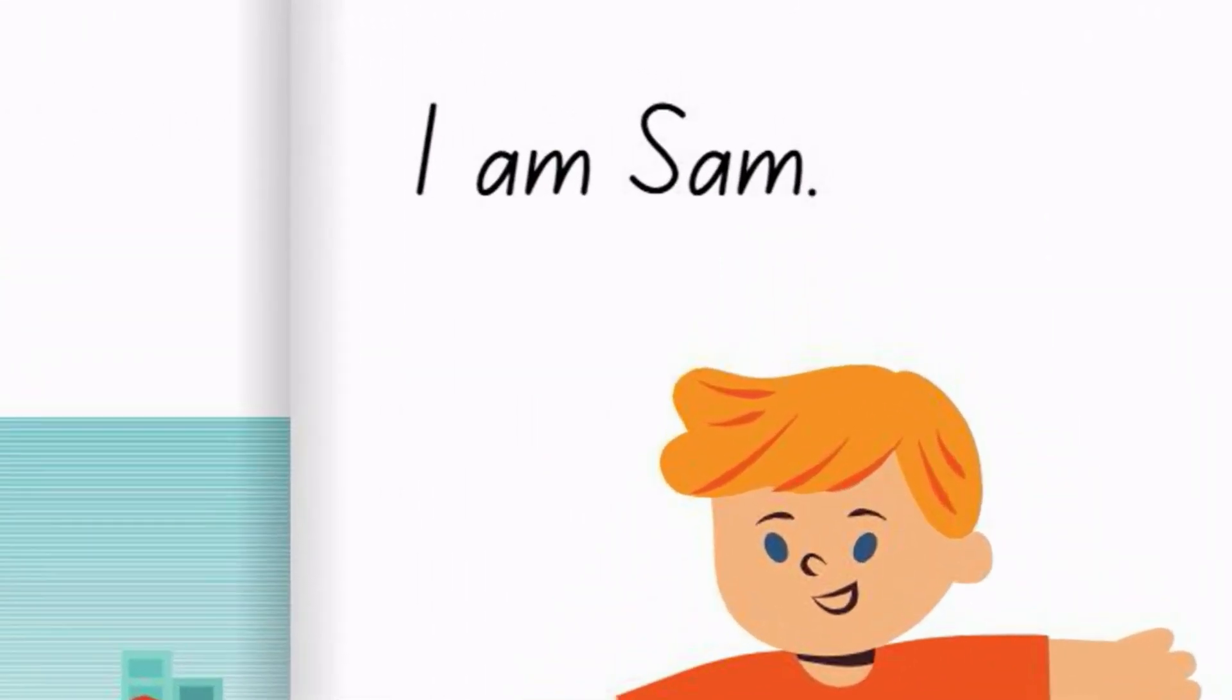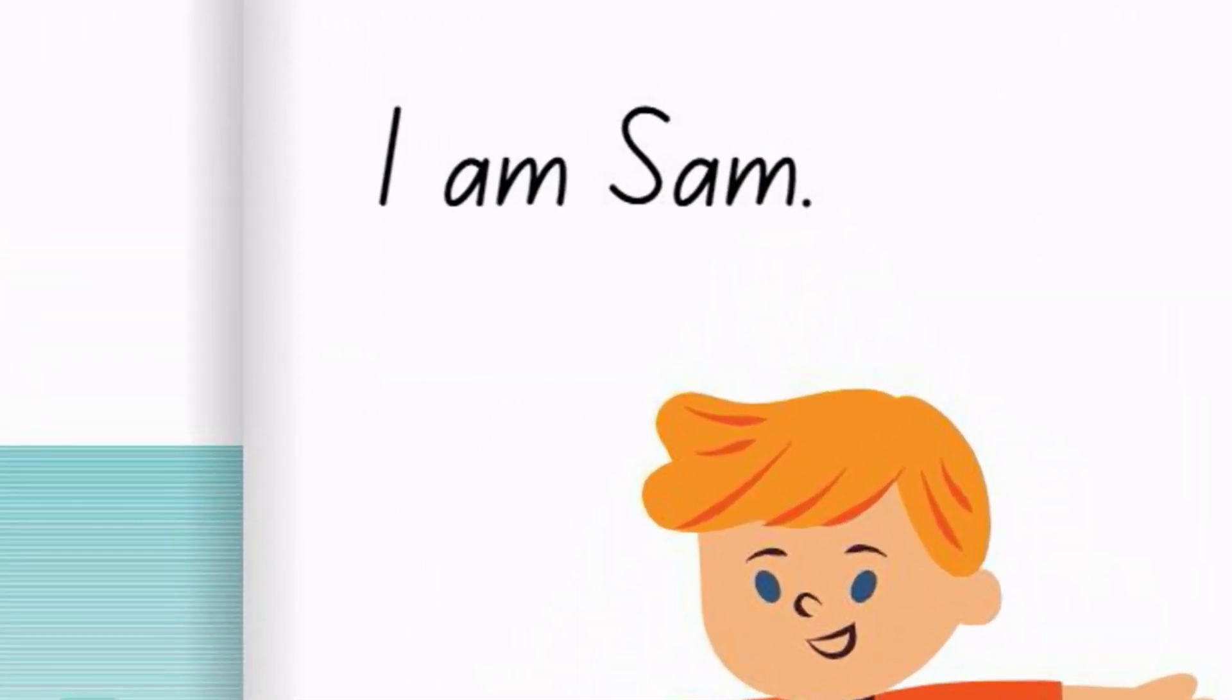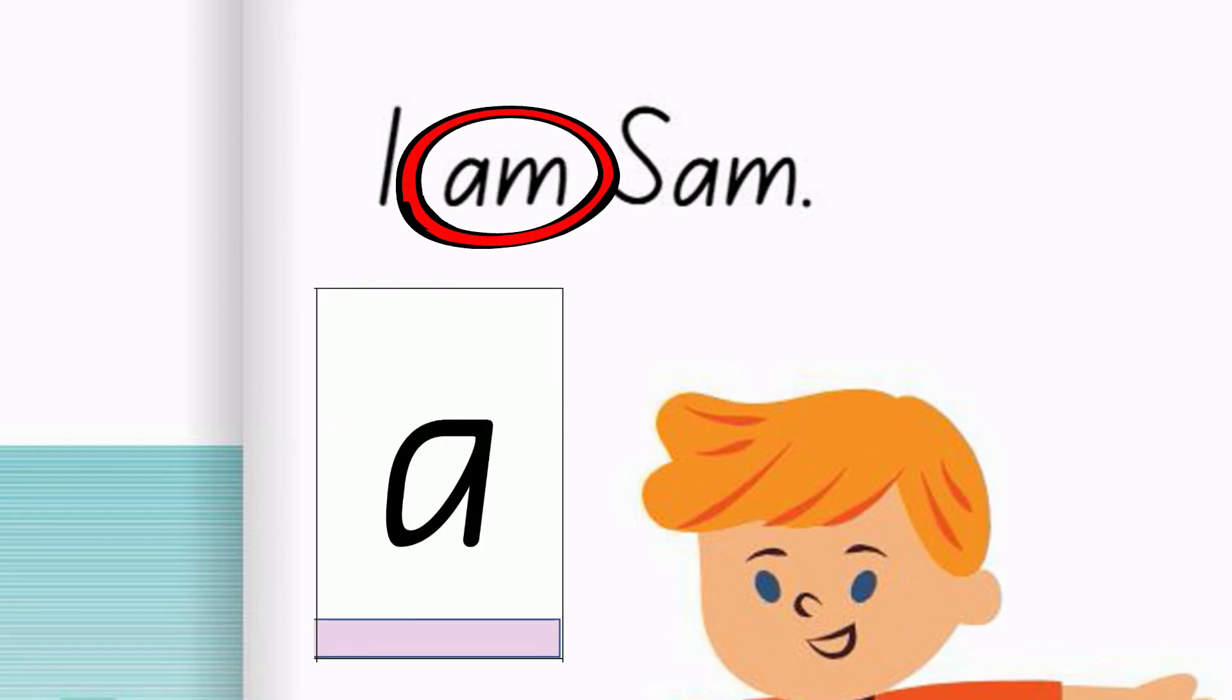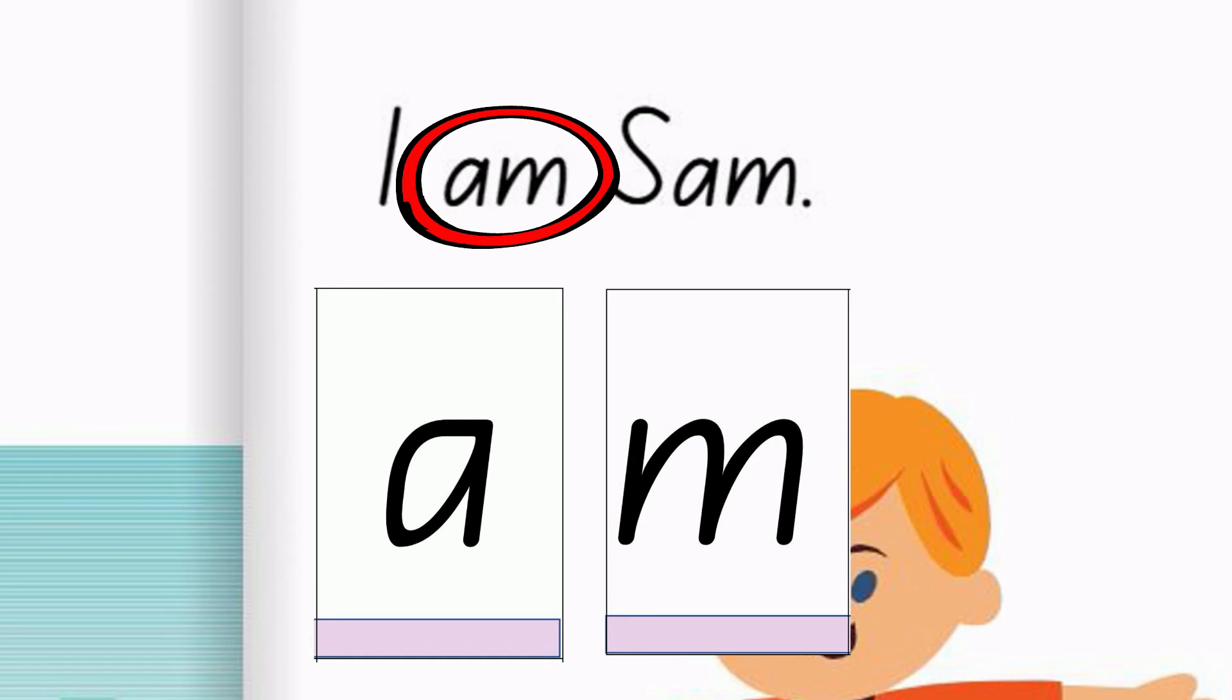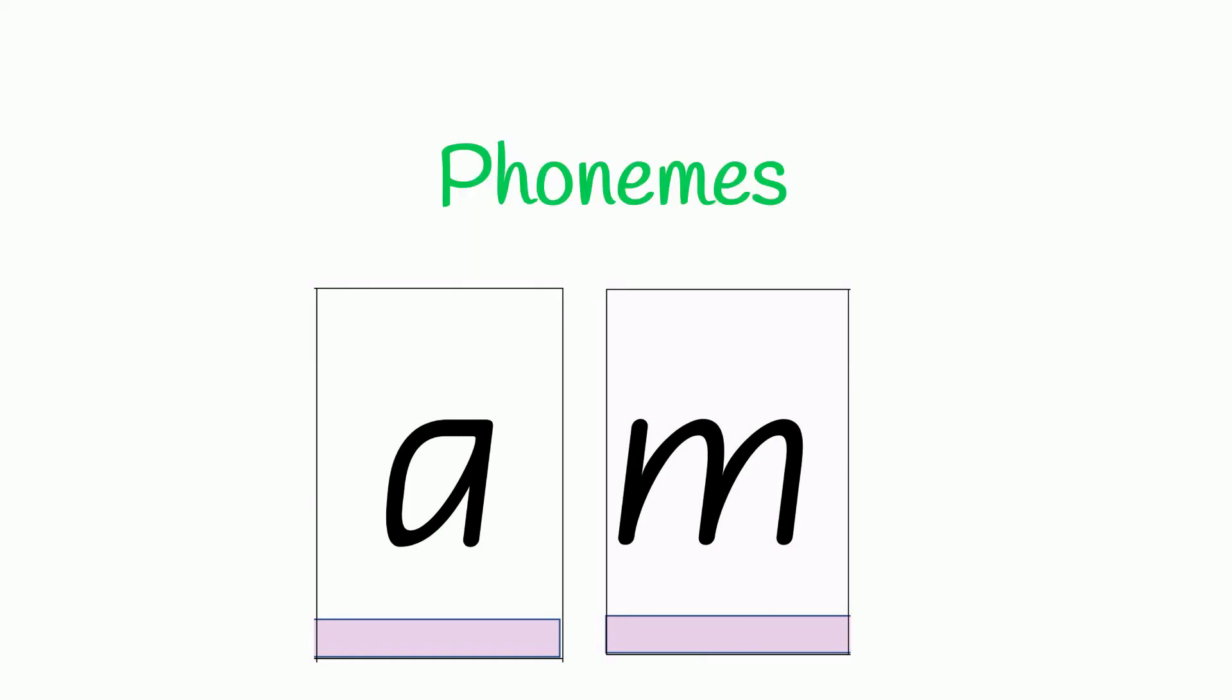Let's take a closer look at one of the words on the page. Am. You can see the letter A and the letter M. These letters represent phonemes. Remember our sound dots? Let's sound them out.